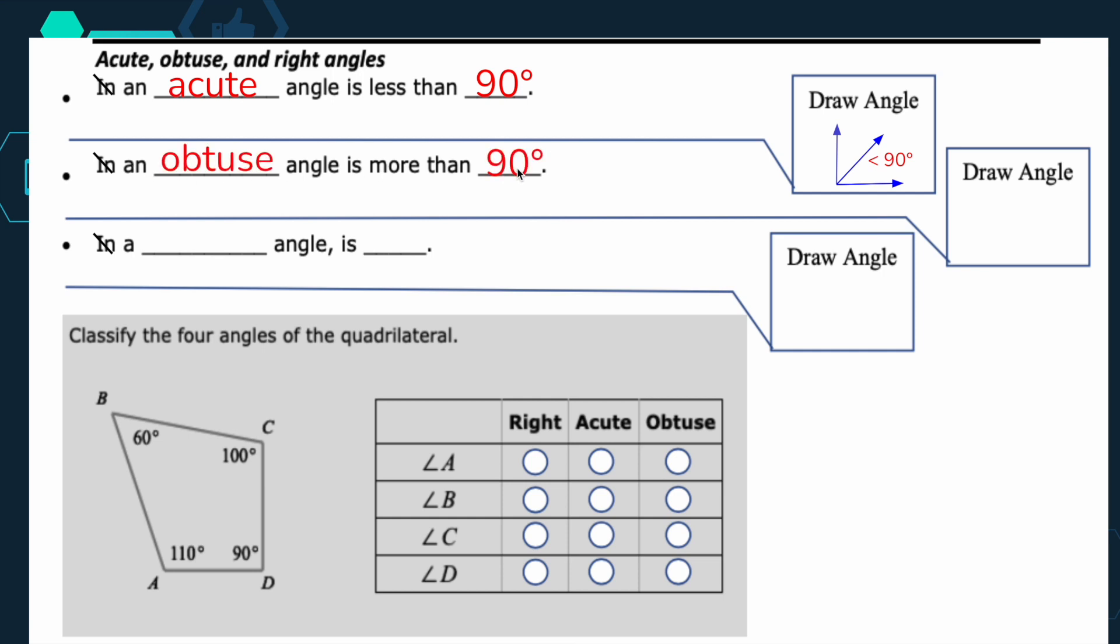An obtuse angle is more than 90. And obtuse kind of has like a big sound to it for whatever reason. I don't know. It always seems like it sounds big to me. So I start with the 90 degree angle again here, but I want something bigger. So I'm going to draw a ray outside of the 90. I'm going to add to it. I'm going to make it even bigger. So 90 plus a little bit more, okay? So it's larger than 90 degrees.